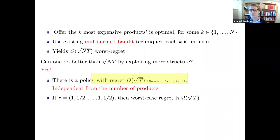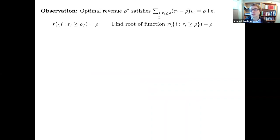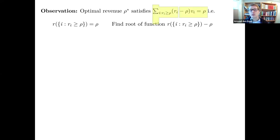I'll present an algorithm by a PhD student of mine that achieves the same regret rate — it fits on half a slide, making it better for pedagogical purposes. Recall the argument showing why the optimal assortment offers the k most expensive products. The optimal revenue ρ* satisfies: the sum over all products with revenue at least ρ of (rᵢ − ρ)vᵢ equals ρ.